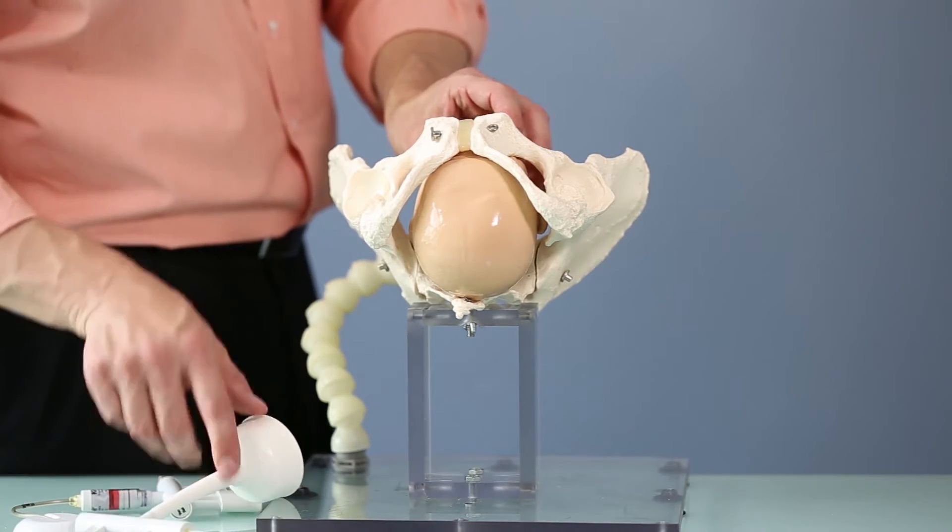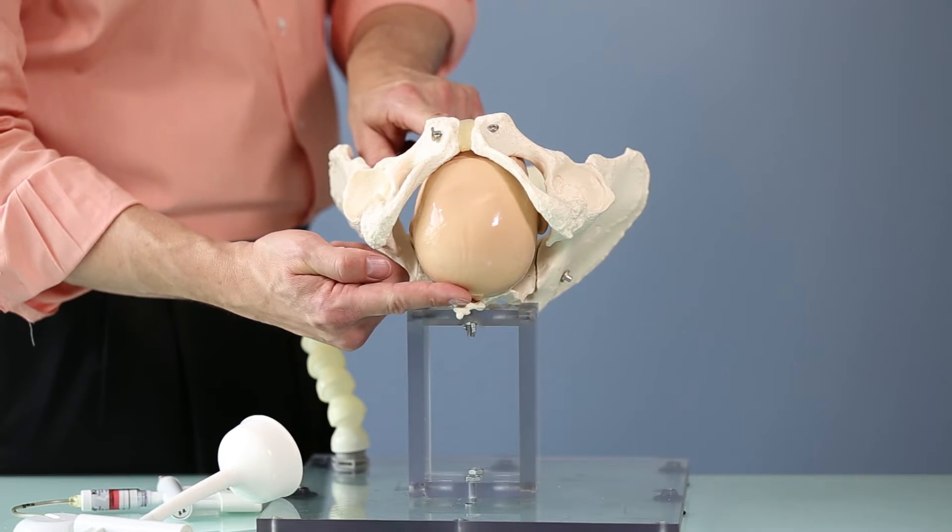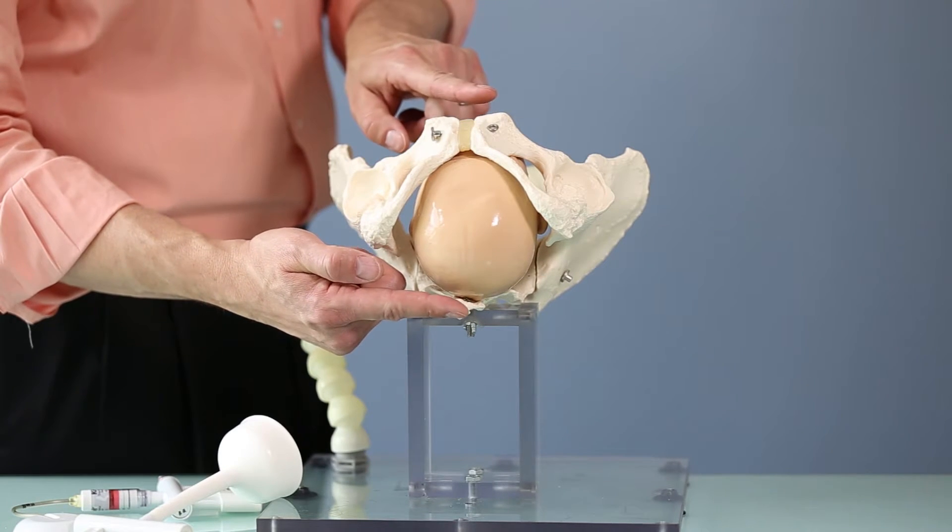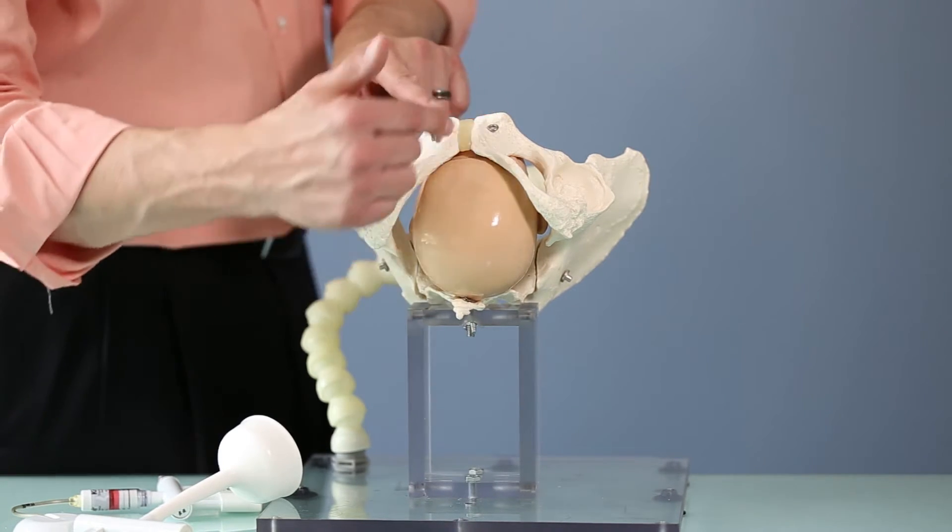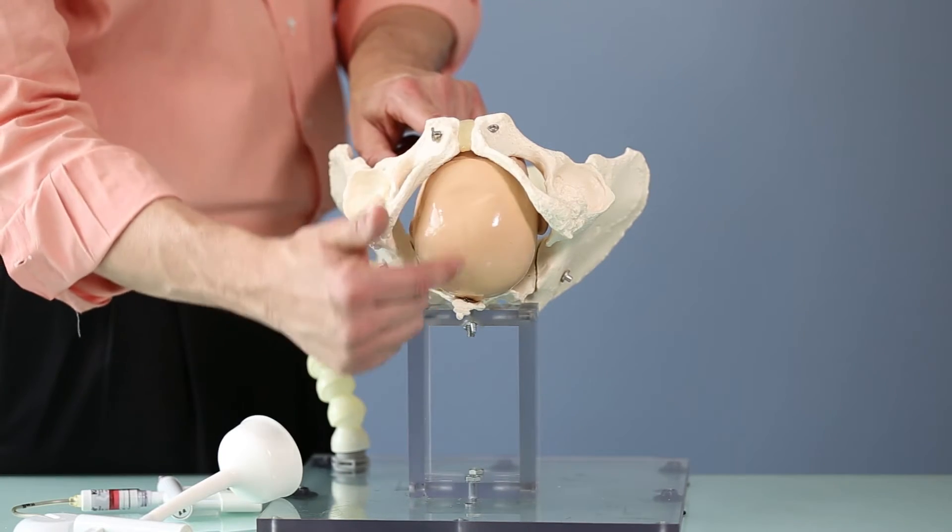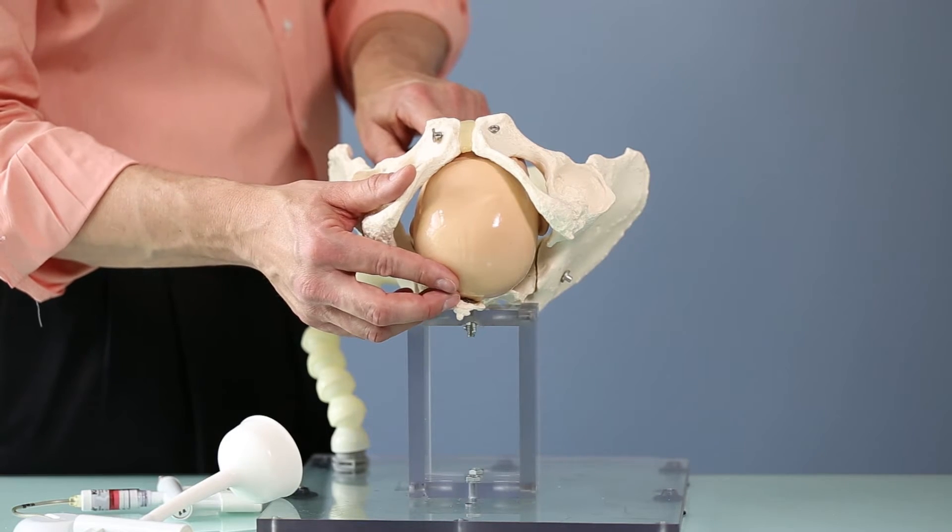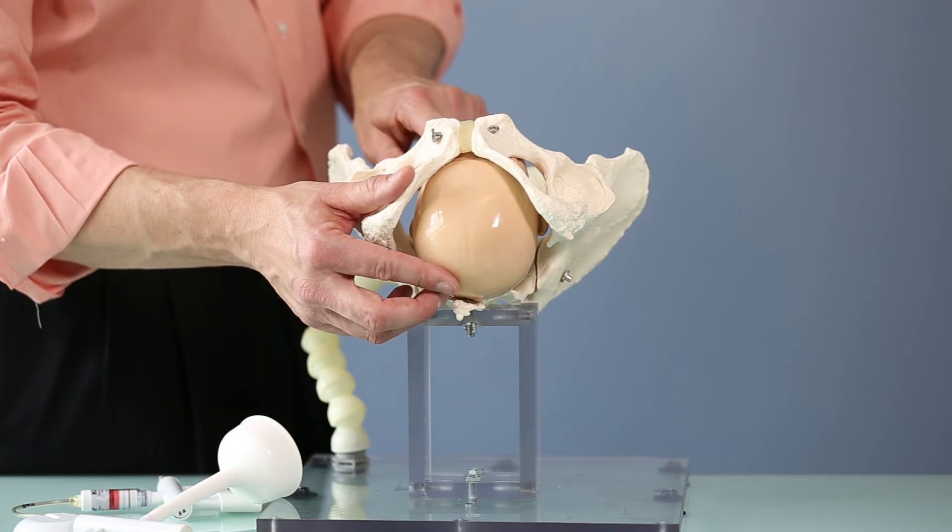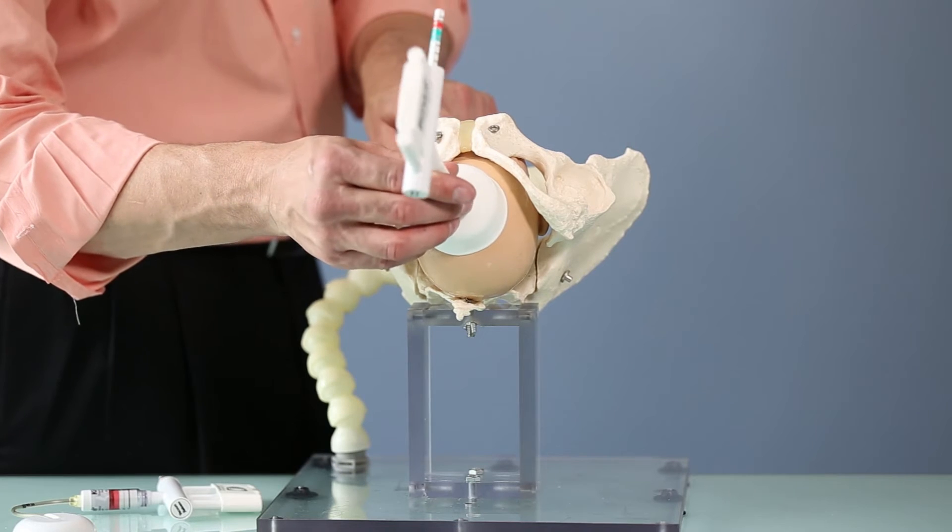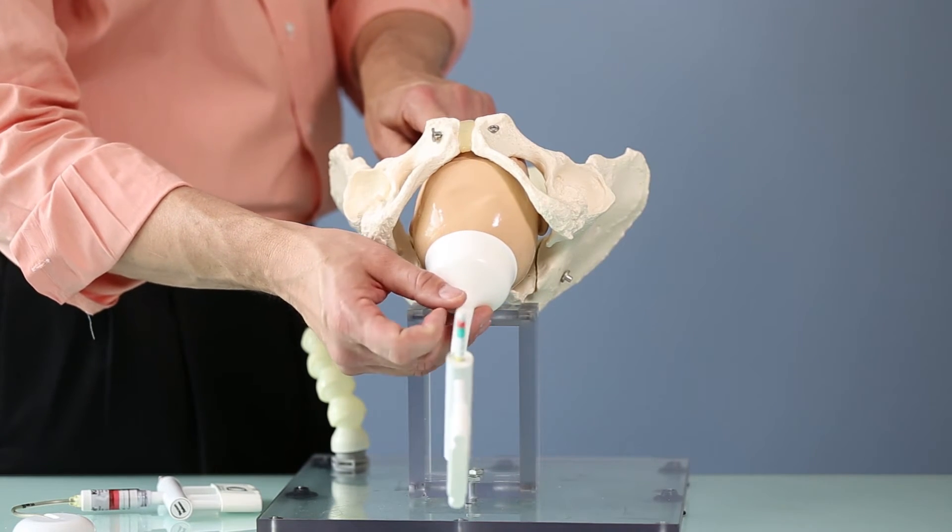The problem with this baby is it lacks flexion. It does not have chin to chest mobility or movement and so it presents a very large anterior posterior diameter of the fetal head to the maternal pelvis, which is going to require more force to bring across the perineum.